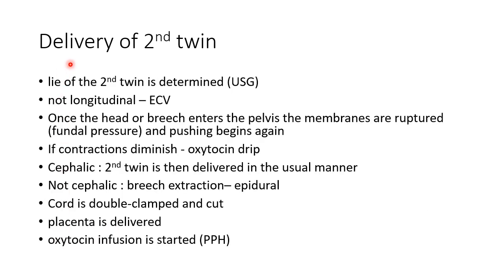After delivery of the first twin, the lie of the second twin is determined. Ultrasound can be used to confirm the presentation of the second twin. When the presentation is not longitudinal, external cephalic version can be attempted. Once the head or breech enters the pelvis, the membranes are ruptured usually by fundal pressure and pushing begins again. If contractions diminish, an oxytocin drip can be used. If the presentation of the second twin is cephalic, it is delivered in the usual manner. If the presentation is breech, breech extraction is done using epidural anesthesia.